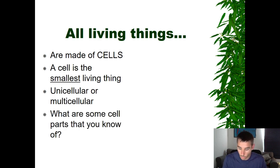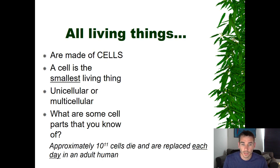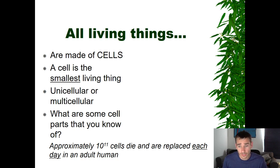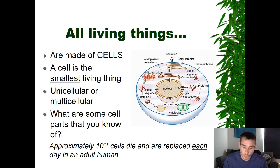It might be a good time to pause and brainstorm some parts of the cell. We're not going into this in detail in this unit, but we will go into more detail next unit. Think back: what are some parts of the cell that you know about? A fun fact: approximately 10 to the 11th cells die and are replaced each day in an adult human. So our cells are constantly dying and being regenerated — we're always rebuilding. There's an image showing the different parts of a cell, so check your brainstorm against that.